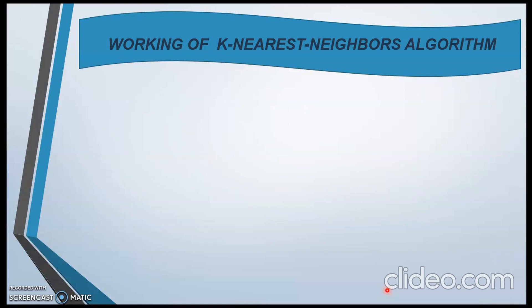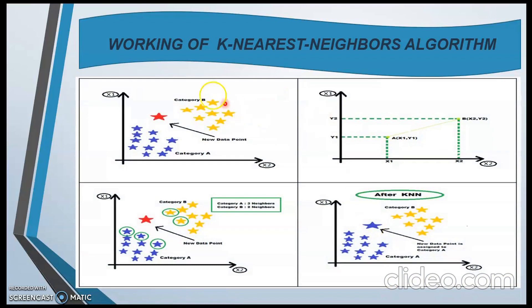Now, we will see working of the K-nearest neighbors algorithm. Here in the first diagram, as we can see we have one new data point and two categories - category A and category B. First, we will calculate the Euclidean distance between this new data point and all neighbor points. After calculating this distance, we will come to know that from category A, there are three neighbors near to our new data point. And from category B, there are two neighbors near to our new data point. After this, we come to know that our new data point belongs to category A.